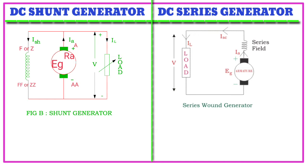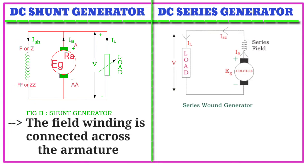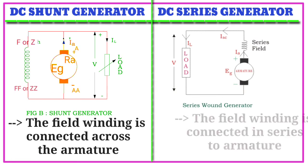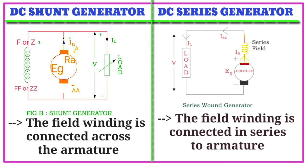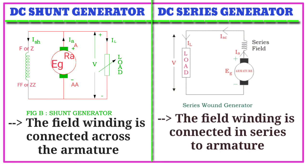The first point is that the field winding is connected across the armature in a shunt generator, whereas the field winding is connected in series to the armature in a series generator.